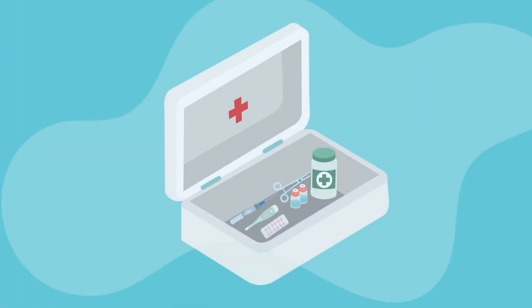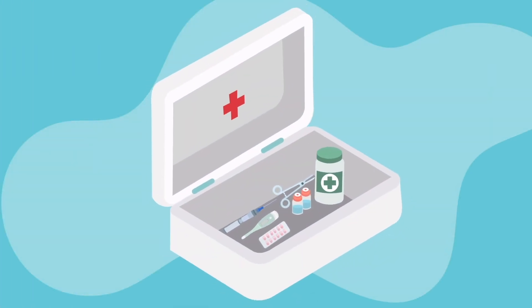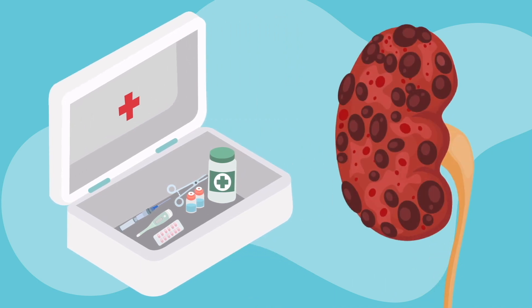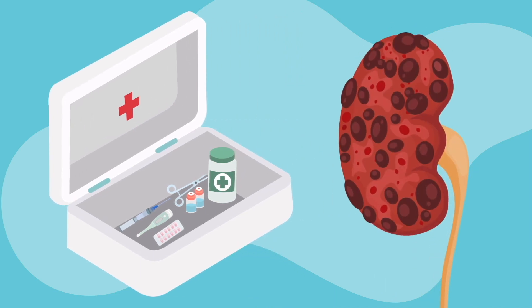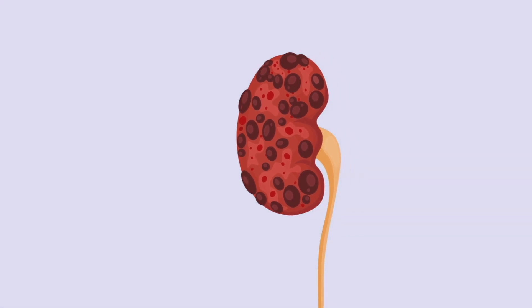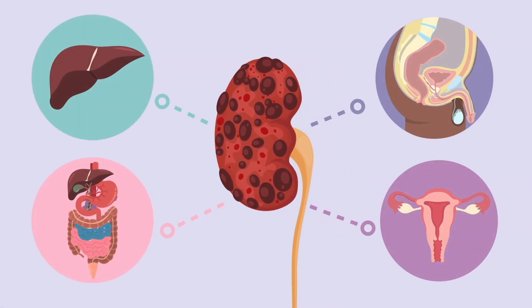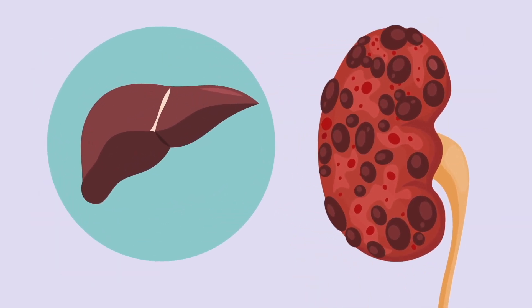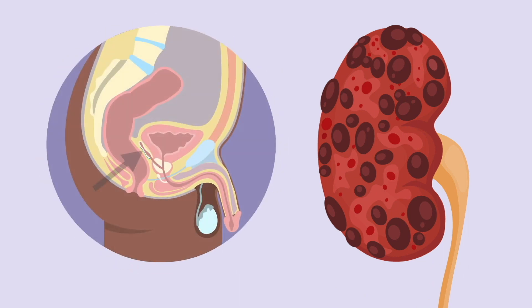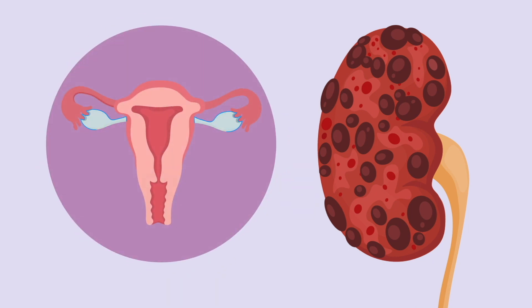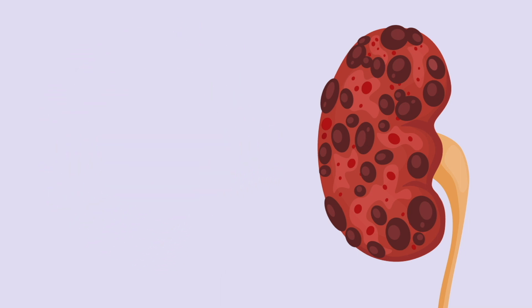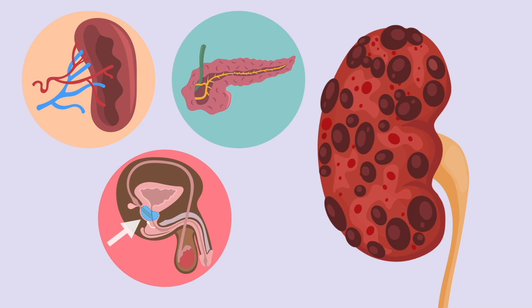Besides these complications that are directly related to kidney disease and the presence of cysts, polycystic kidney disease is often associated with other conditions throughout the body. The most common is the presence of cysts in organs other than the kidneys. The most affected organs are the liver, the seminal vesicles in men, and the ovaries in women. But other organs can also be affected, such as the spleen, the pancreas, or the prostate.